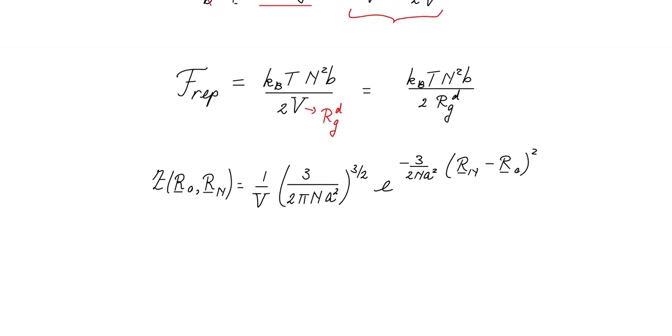In the previous movie, which dealt with free and Gaussian chains, we have calculated the partition function of a Gaussian chain with a fixed position of the first and the nth bead, the 0th and the nth bead. If we take kT times the logarithm of this expression, then we have the free energy. Realizing that this end-to-end distance is proportional to the radius of gyration, we just replace it by the radius of gyration. Then we obtain this expression for the Gaussian free energy. The total free energy is then the sum of these two contributions, the repulsive and the Gaussian free energy.